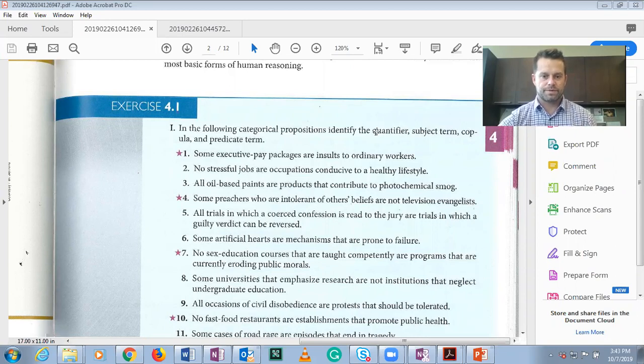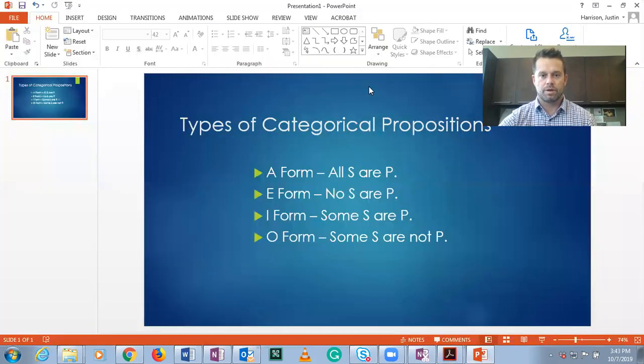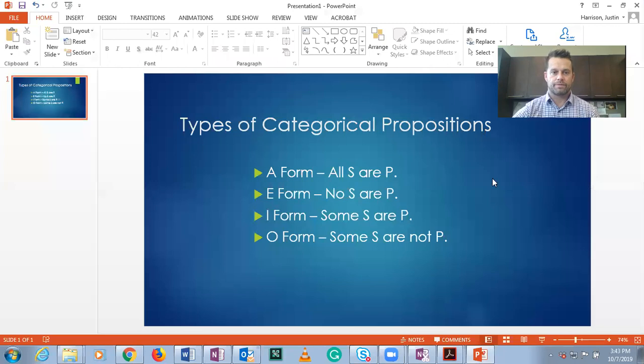So the first thing we need to do here is to just briefly go over the four types of categorical propositions. This is in the textbook. It's pretty simple. A form has the form all S are P, E form no S are P, I form some S are P, and O form some S are not P. So that's pretty much it.